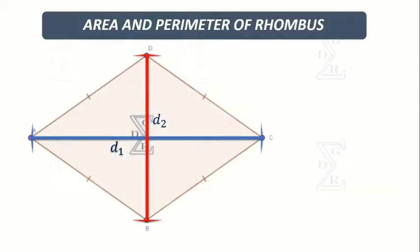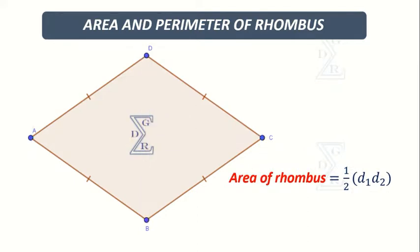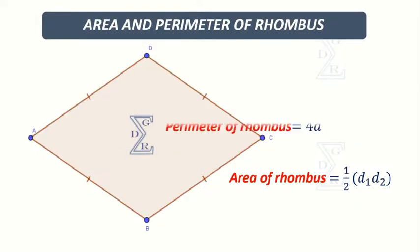Area of rhombus is the product of half, D1, D2. If each side of a rhombus is A, then the perimeter of the rhombus is four times A.